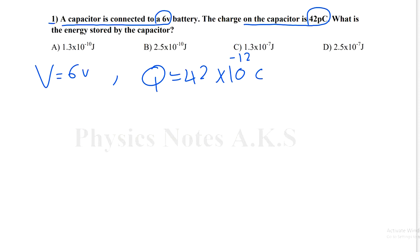They need the energy. I have three formulas of the energy. I choose the one that contains the Q and V. So I have half QV. So half, multiply 42, multiply 10 to the power negative 12, multiply the V which is 6.